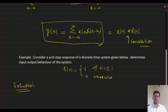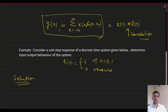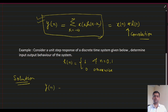So, I can use the convolution sum which was calculated earlier: Y(N) equal to summation from K equal to minus infinity to infinity. Here you can see that H(N) is non-zero only at N equal to 0 and 1.